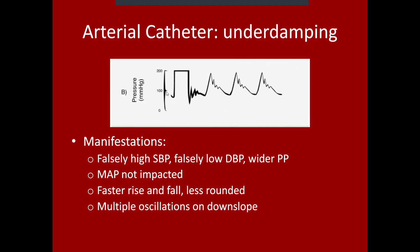When you evaluate the damping of an arterial line, you see a sharp upstroke and a relatively narrower waveform. On the downstroke, you see a sawtooth pattern showing that there's not as much shock absorption or damping as the wave dissipates down the arterial system. That's what we expect to see with an underdamped A-line.